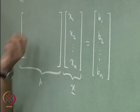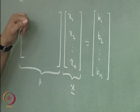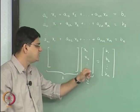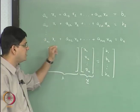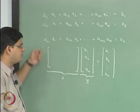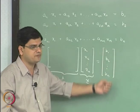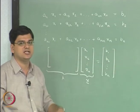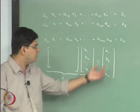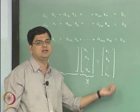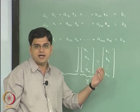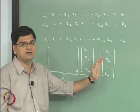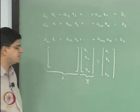This matrix A has a dimension where it must have n number of columns because there are n variables, and the number of rows will be equal to the number of equations. In this particular example, we have taken n equations in n unknowns. If the number of equations were not equal to n — say there were m number of equations — we would have m number of rows and n number of columns in matrix A.